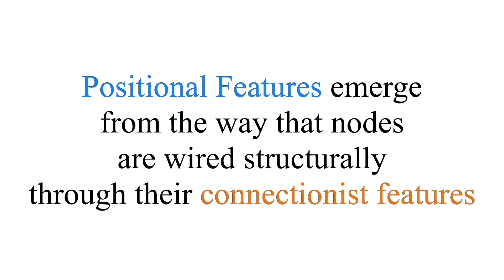We've just discussed connectionist features of a network and we're moving on to positional features. Positional features are actually a consequence of how the network is wired. They are node-level measures that emerge from the way the network is structurally put together, and we capture positional features with several different kinds of measures.